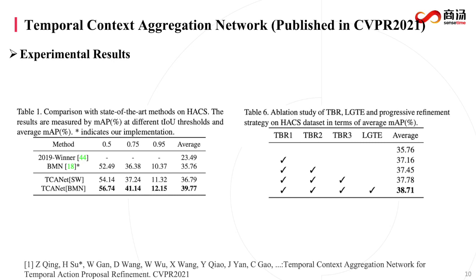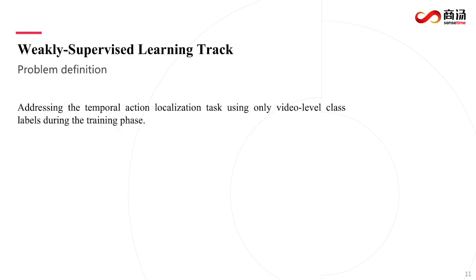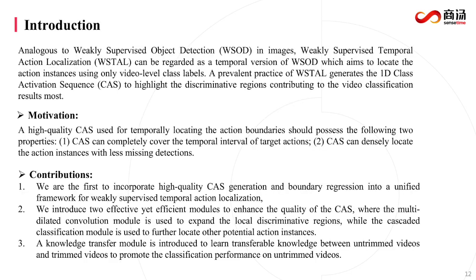Our experimental results for the supervised learning track are listed in the tables. We continue to introduce the weakly supervised learning track problem. It requires addressing temporal action localization using only video-level class labels during training, analogous to weakly supervised object detection in images. A prevalent practice generates a one-dimensional class activation sequence to highlight discriminative regions contributing to video classification. A high-quality CAS for temporally locating action boundaries should completely cover the temporal interval of target actions and densely locate action instances with few missing detections.